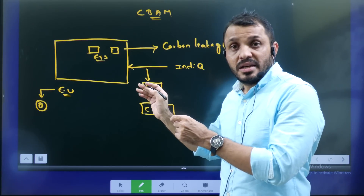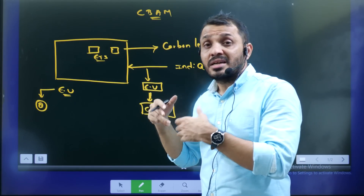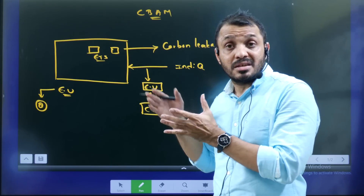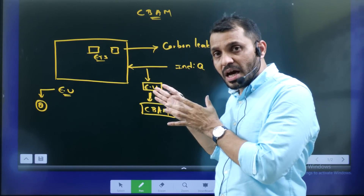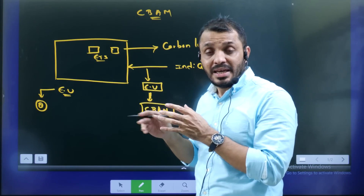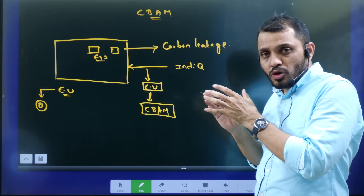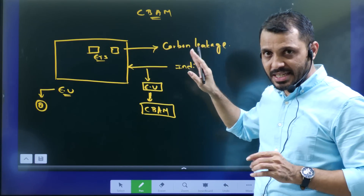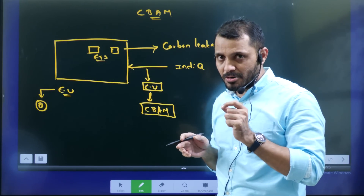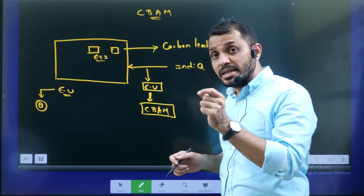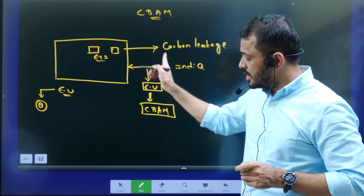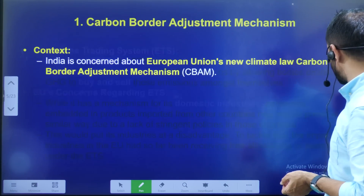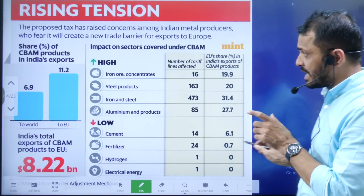What is carbon leakage? The European Union taxes carbon emissions from companies. Carbon leakage occurs when the European Union imports products that are not subject to the same carbon costs, making the impact on the EU unequal.